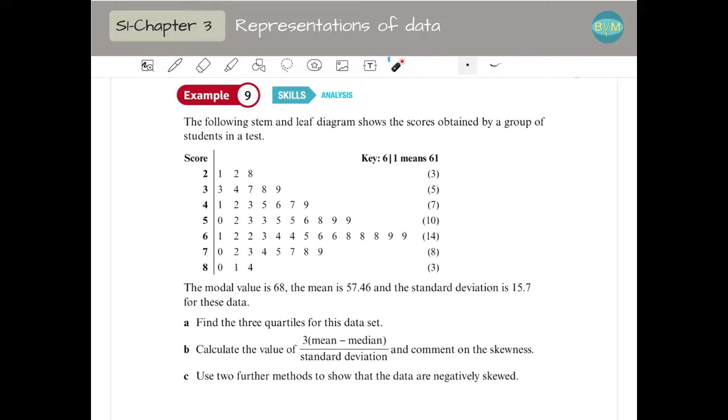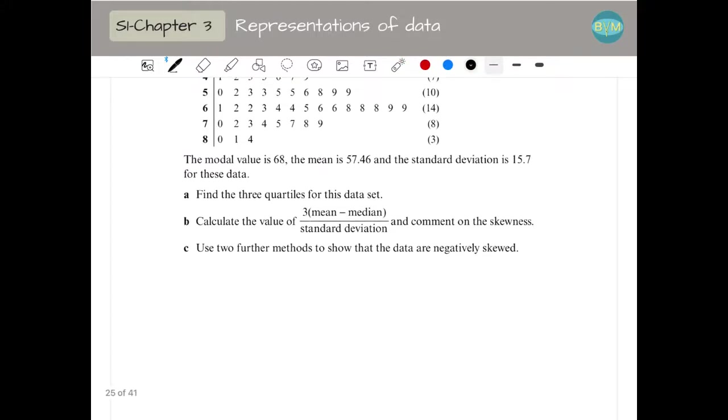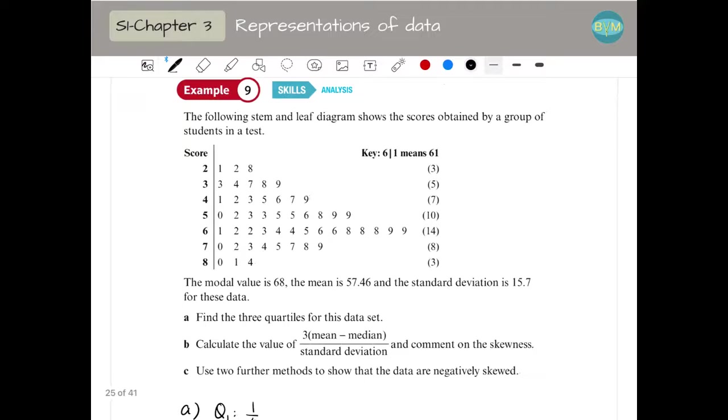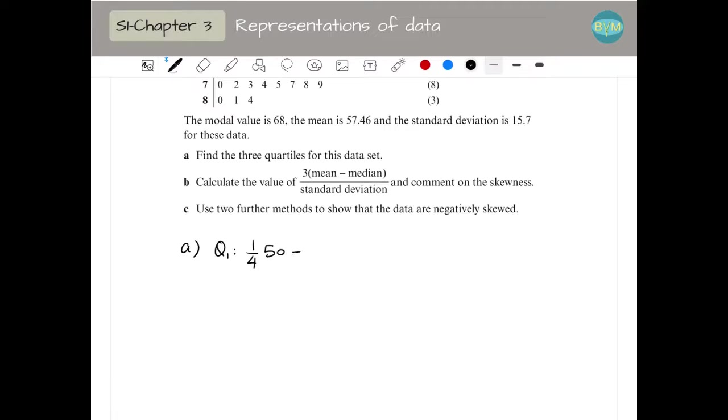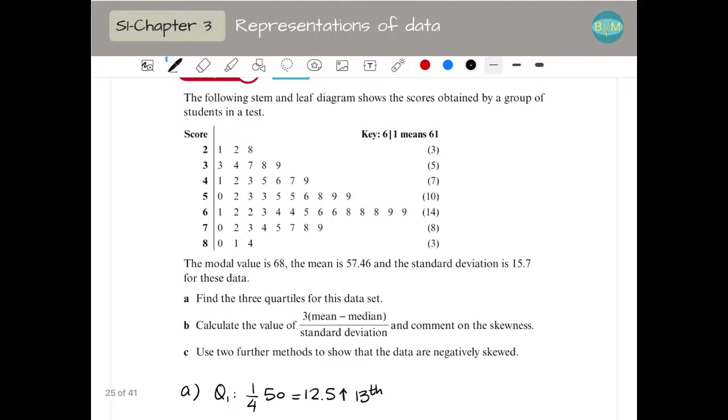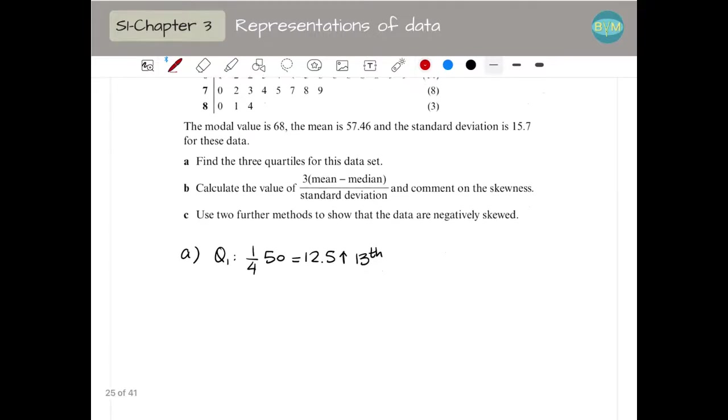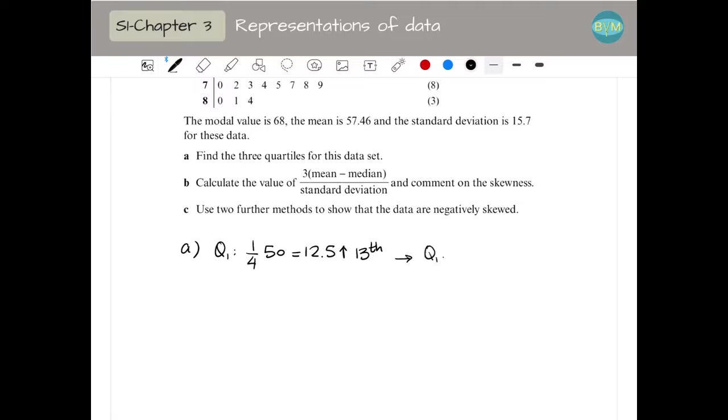And they ask us first to find the three quartiles for this data set. So as we have done before, remember Q1, I need to find one quarter of the data that I have, which is 50 values. So one quarter of 50 is 12.5, a decimal number, so I'm going to round up. Remember watching the video in chapter two about quartiles if you need. So I'm going to check the 13th value, which is 46. Q1 is 46.